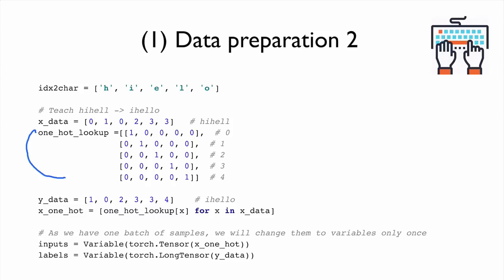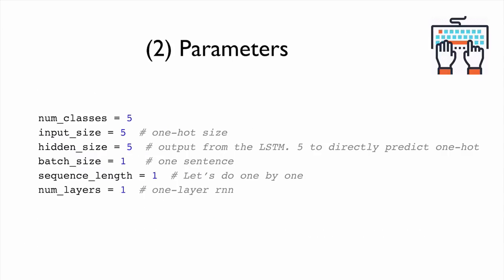A better way to create one-hot vectors is to make a lookup table and use a Python expression: define x_data, then look up the one-hot lookup table to compose the one-hot vectors. We also define parameters: number of classes is 5, input size is 5, hidden (output) size is 5, batch is 1, sequence length is 1, and number of layers is 1. It's easier to define all parameters in one place.